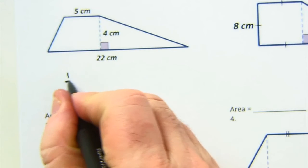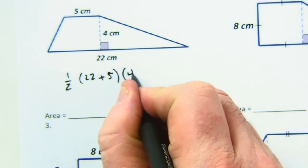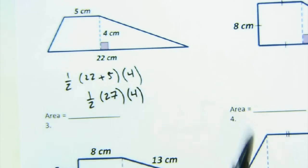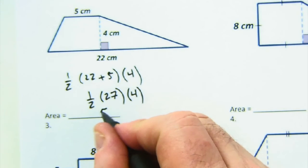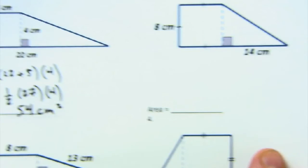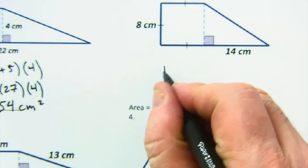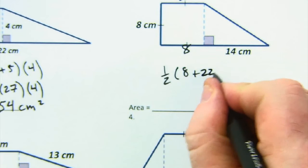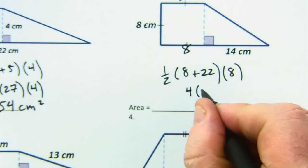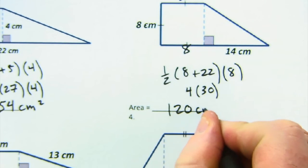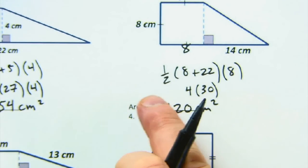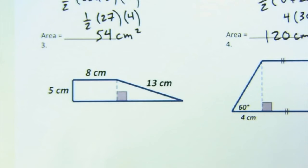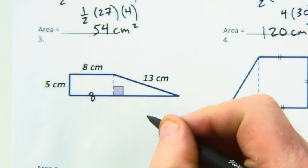Let's do some math examples. Our formula is one half times (b1 + b2) times h. For the first example: b1 = 22, b2 = 5, so 22 + 5 = 27, multiplied by height 4, divided by 2 gives 54 cm². For the next example: b1 = 8, b2 = 22, height = 8. This becomes 4 times 30 = 120 cm². You can multiply everything first and then take half, or take half of one factor first.